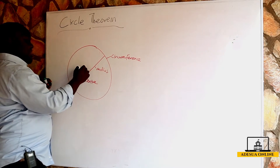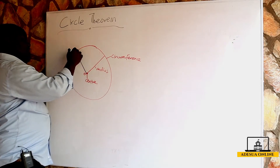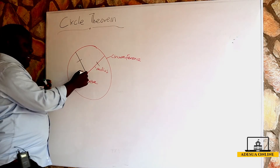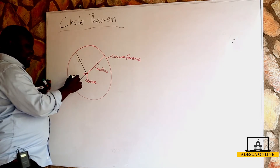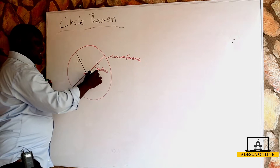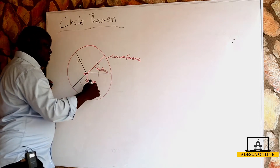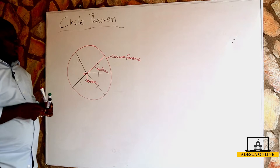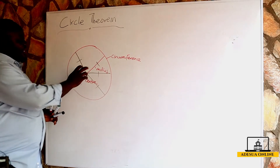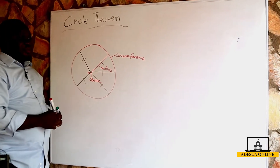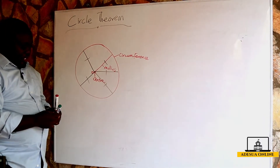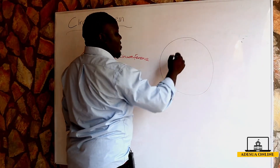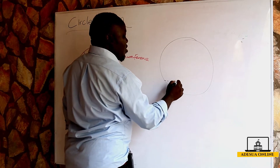At any point, if I draw a line to the circumference, this line should be equal to any other line drawn from the center. This line is equal to this line, and this line is equal to this line. So the radius is always equal in length from the center to the circumference of the circle. Now when we have a circle, we can have what we call a chord.